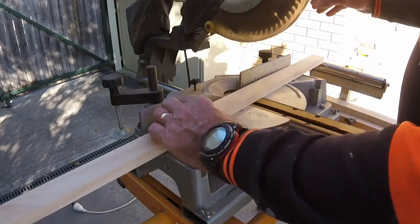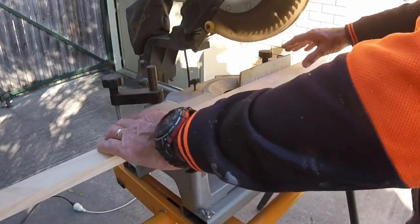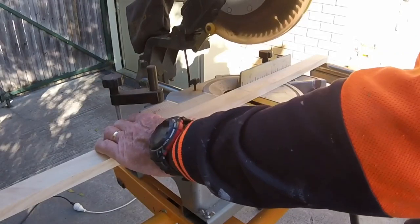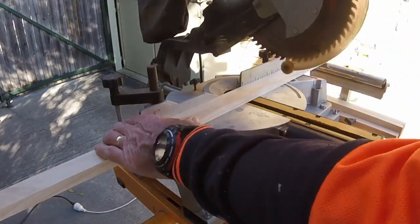Next job is to cut to size and pre-drill the shelf supports. The new supports are being cut from 41 by 19 millimetre dressed pine.